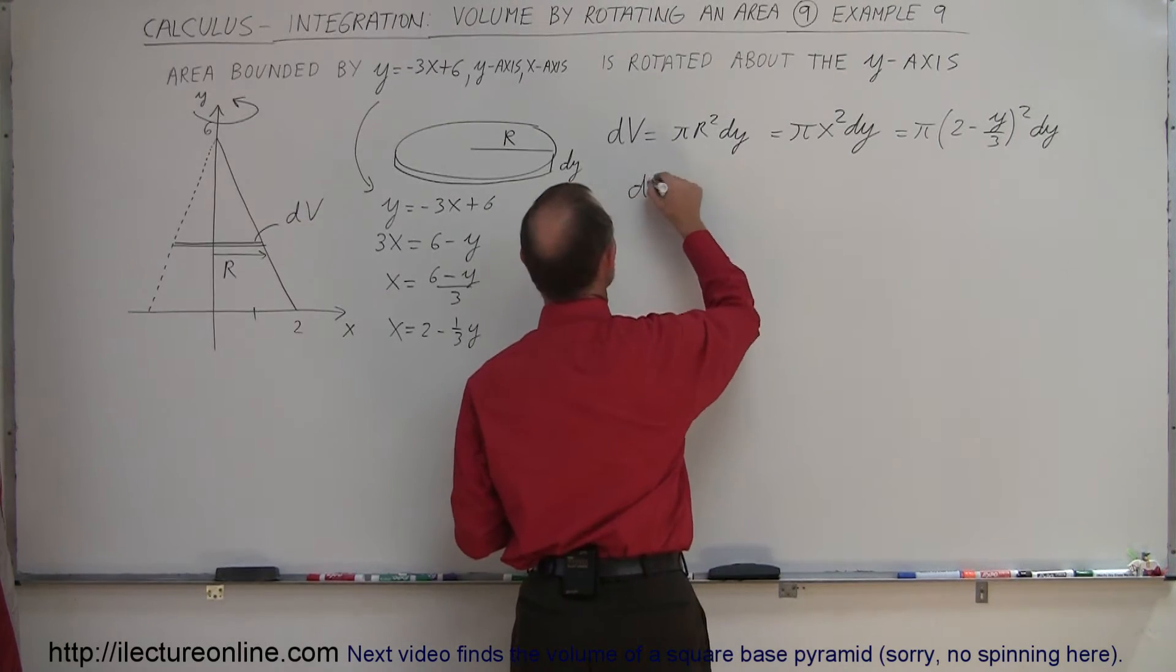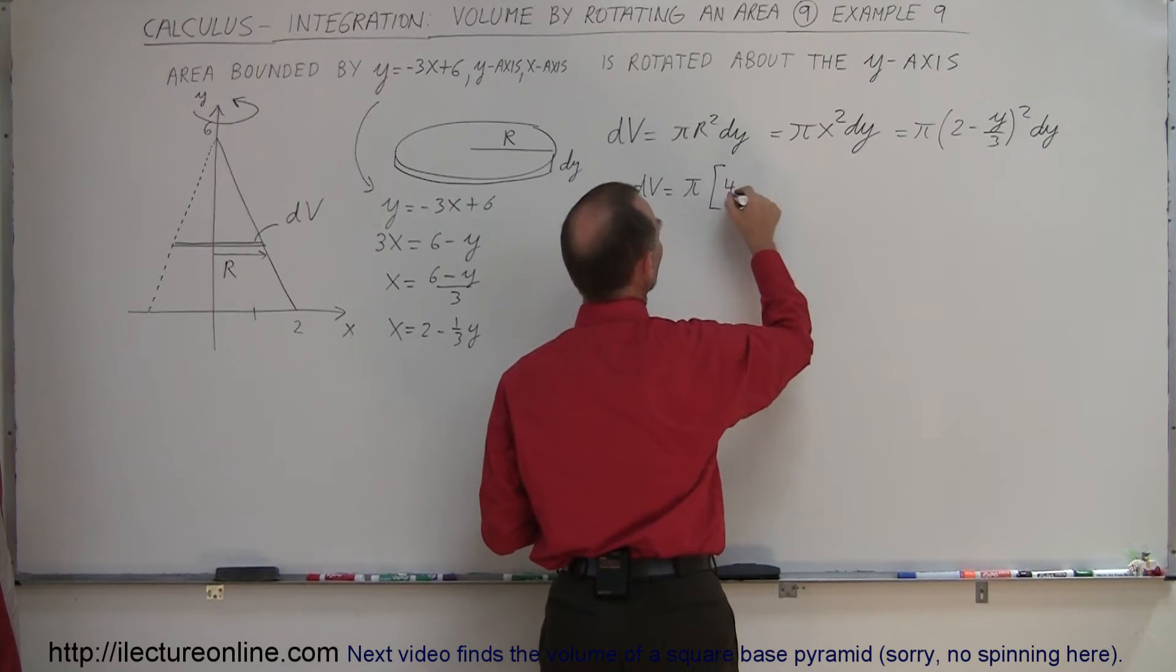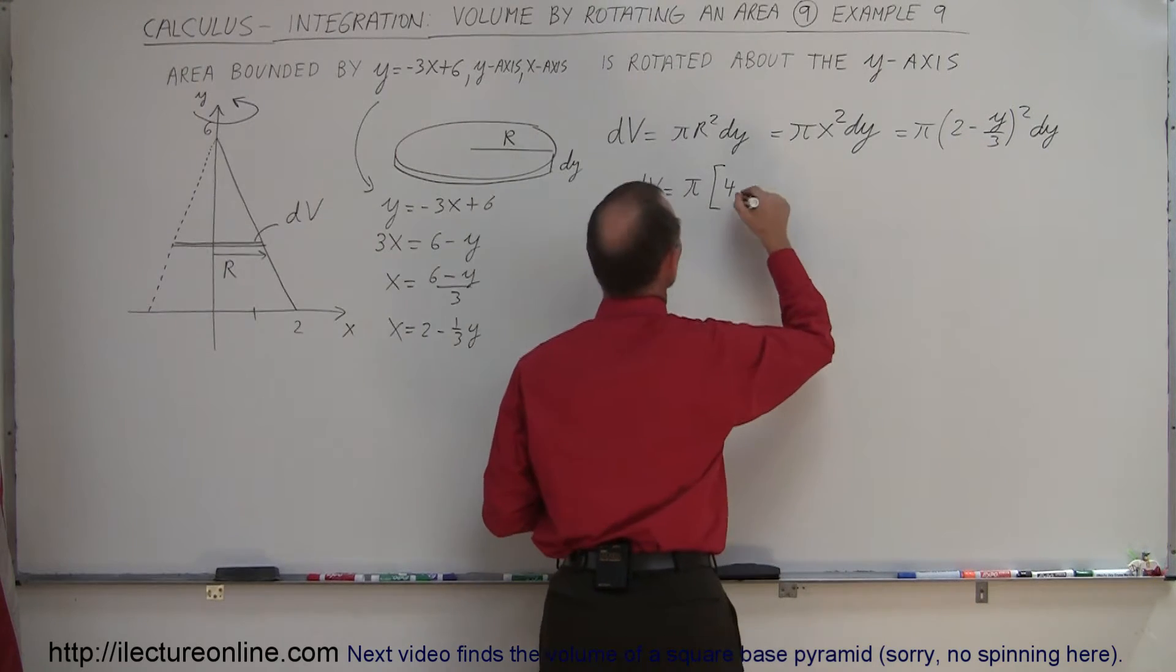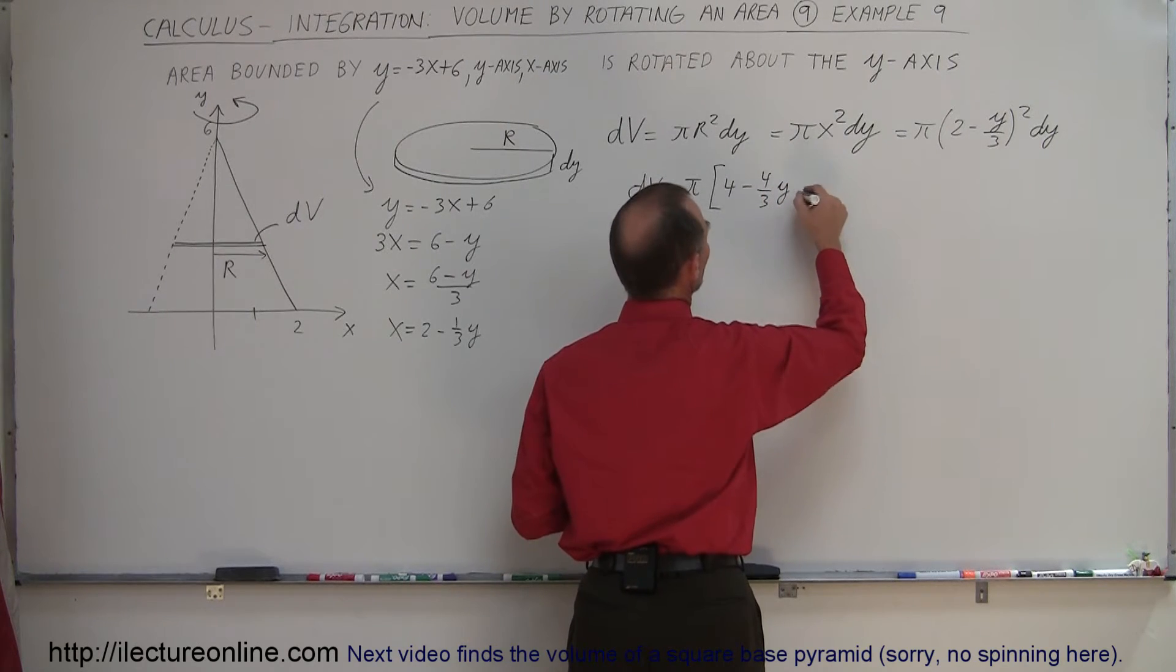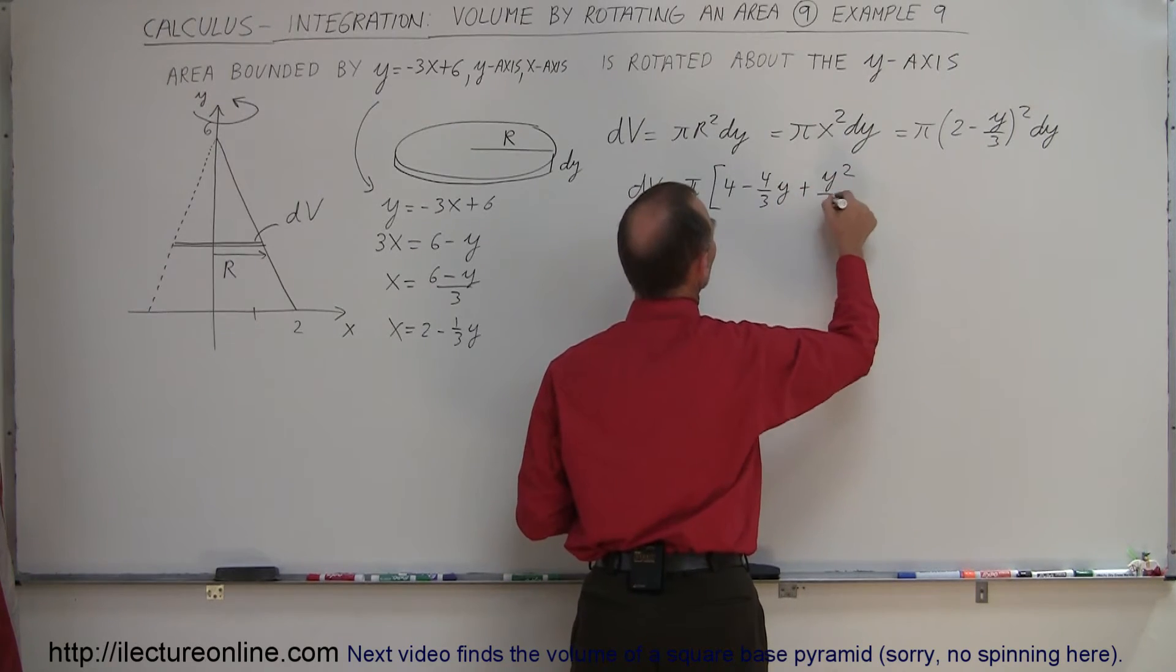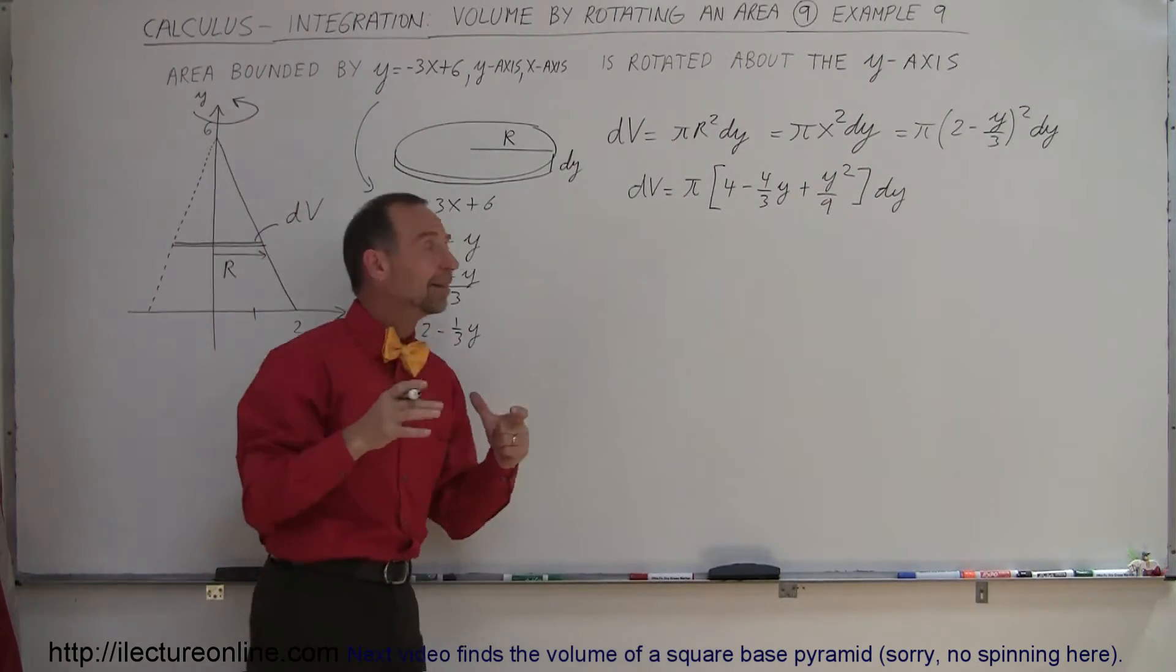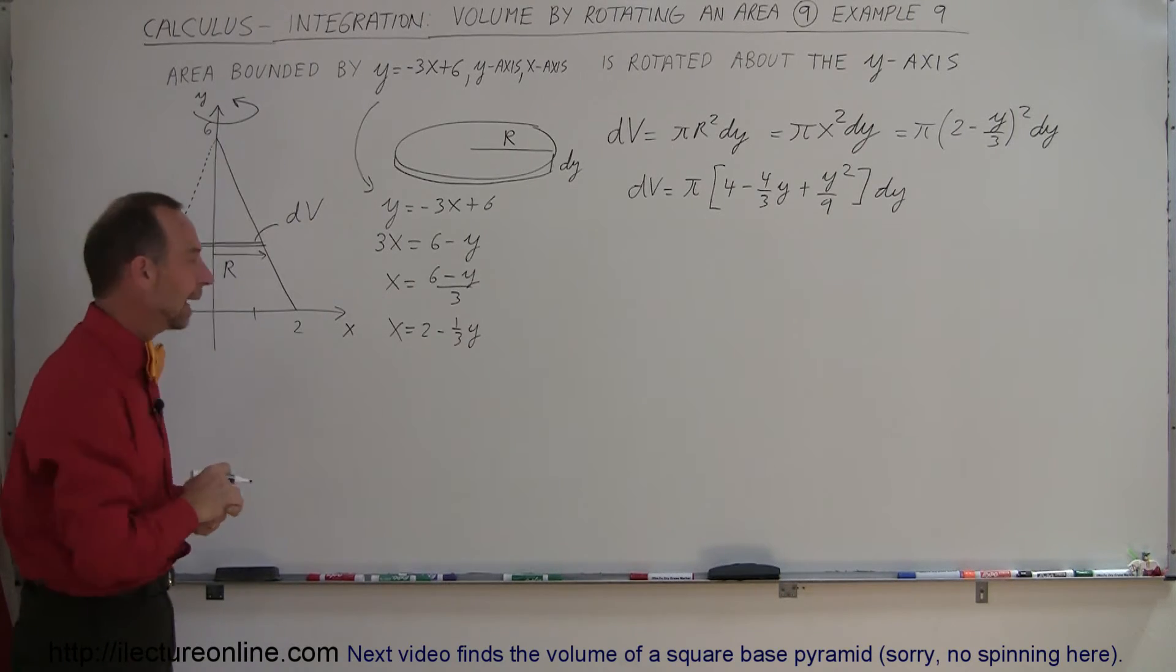So we now say that dv is equal to π times, that would be 4, twice the product of those two. That would be minus 2 thirds y, and that would be minus 4 thirds y. And squaring the last term, that would be plus y squared over 9, times dy. And so now I have my volume, my disk, that dv, expressed in terms of y only, and I'm able to integrate that.